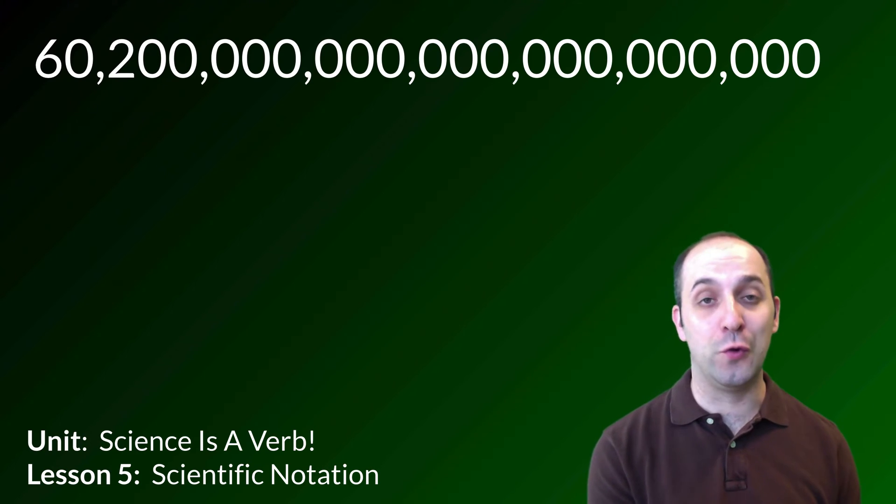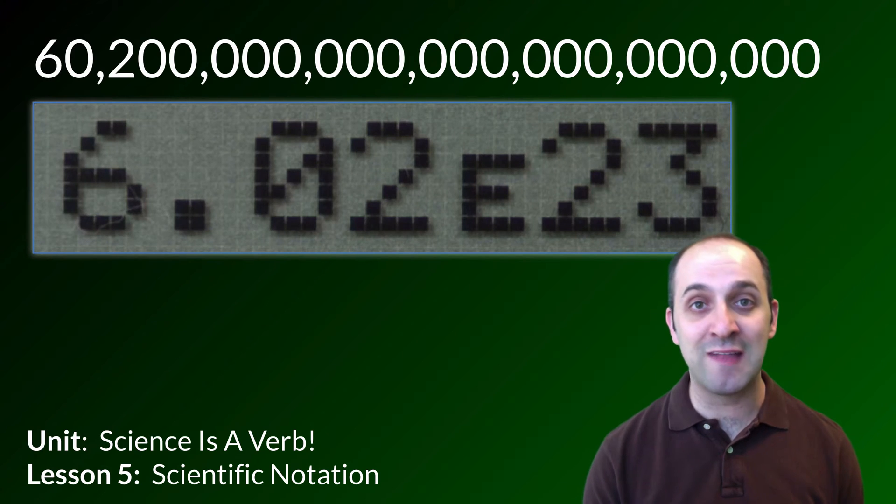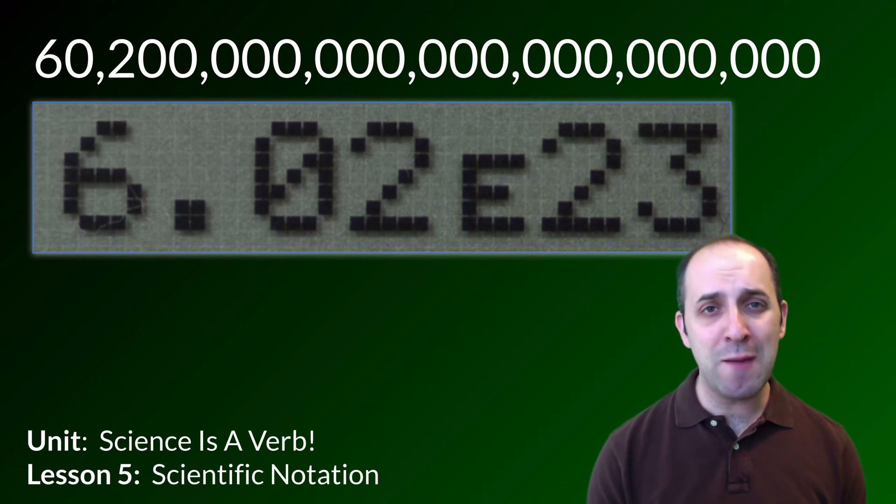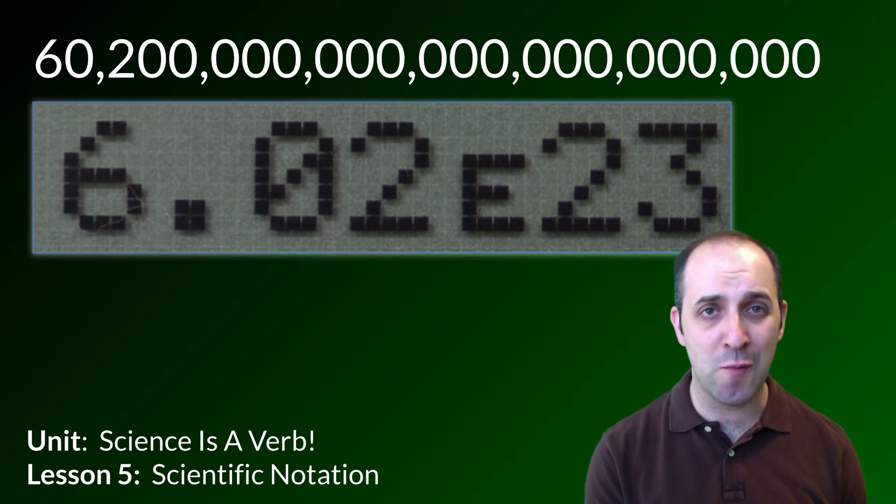6, 0, 2, and 21 zeros after it. And this, of course, is the way we would write this in scientific notation. Now, you may be a little bit confused by that capital E, but just hold on to that till the end. We'll talk about it, and I hope it'll make a whole lot more sense at that point.